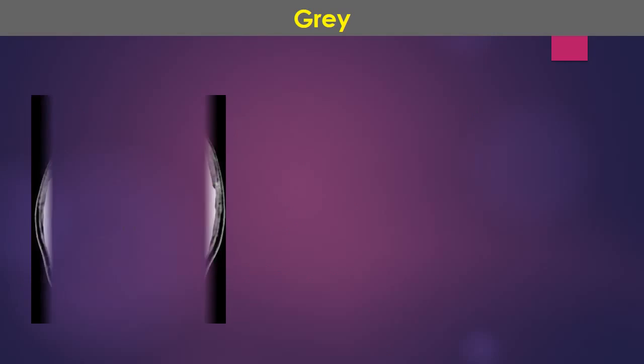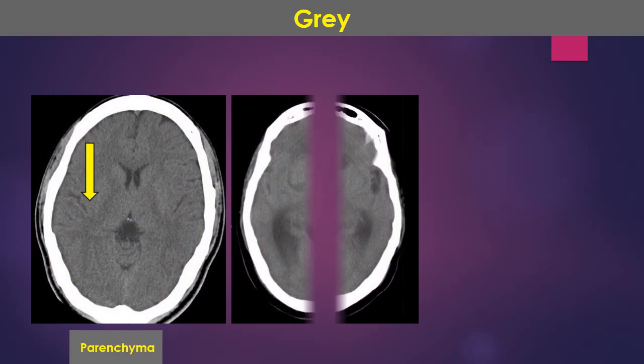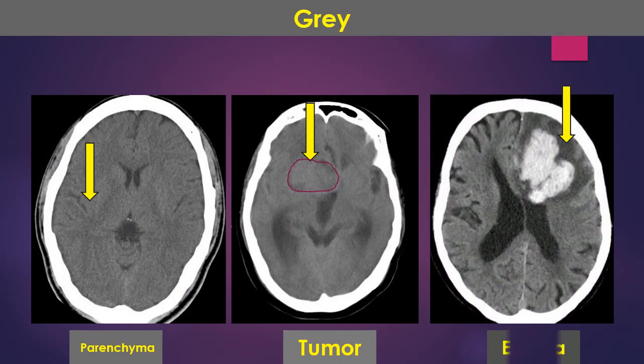Tissues which are seen gray on CT brain are brain parenchyma, tumor, and edema which is seen as dark gray.